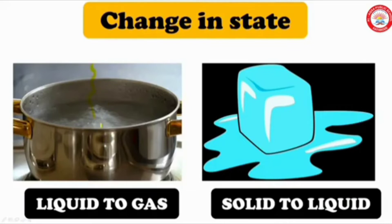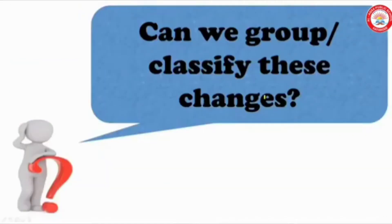When we are heating, liquid will convert to gas, and according to temperature, solid ice will change to liquid. Can I ask one question? How can we group various changes?